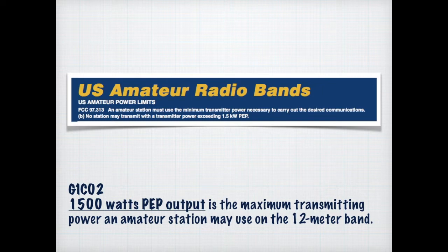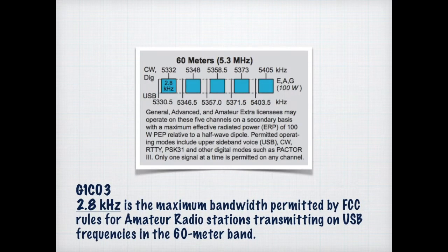You could fry eggs with that kind of power. A typical microwave uses 1,500 watts to cook food, so that gives you an idea of how much power is involved. 2.8 kilohertz is the maximum bandwidth permitted by the FCC rules for amateur radio stations transmitting on the upper sideband frequencies in the 60-meter band. The normal voice range is somewhere between 0 and 3 kilohertz, so it's well within the voice range.